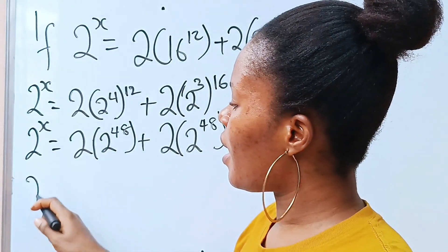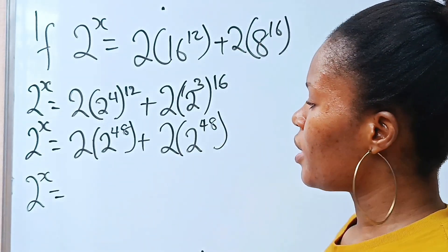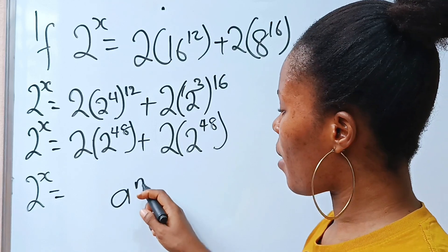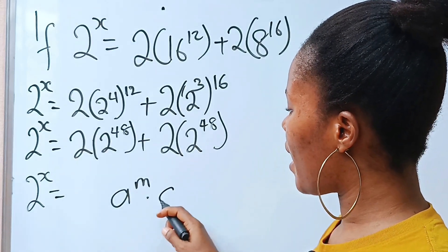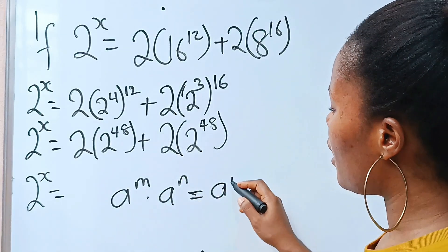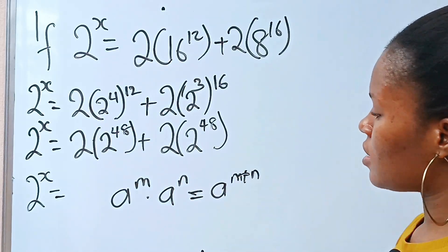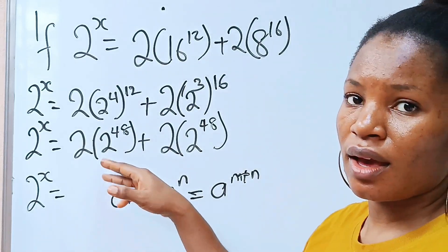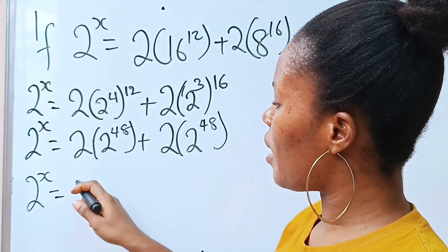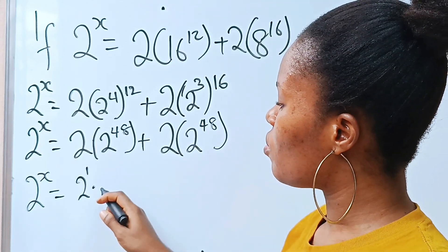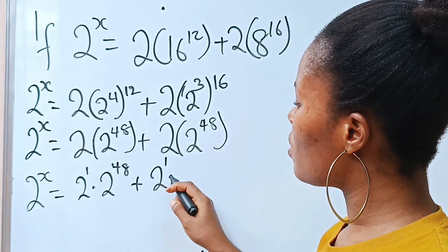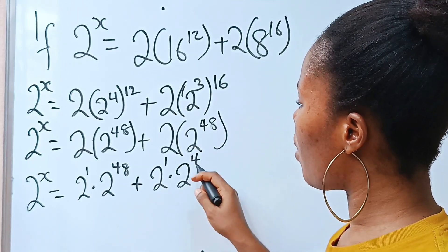So we now have 2 to the power of x is equal to... Another law of exponents says that a to the power of m multiplied by a to the power of n — once you have the same base, just pick one base and add the powers. Applying that here, we have 2 to the power of 1 multiplied by 2 to the power of 48, plus 2 to the power of 1 multiplied by 2 to the power of 48.